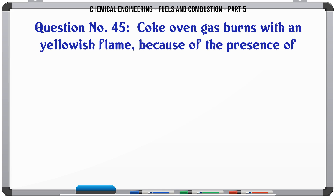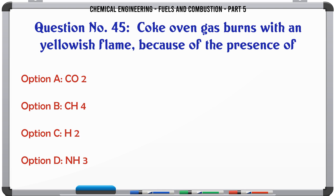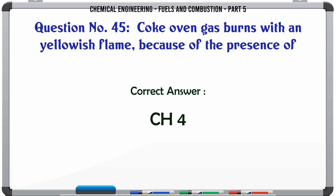Coke oven gas burns with a yellowish flame because of the presence of: A. CO₂. B. CH₄. C. C₂H₂. D. NH₃. The correct answer is CH₄.